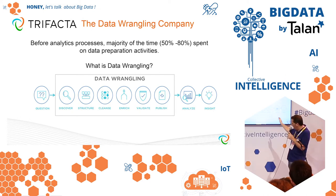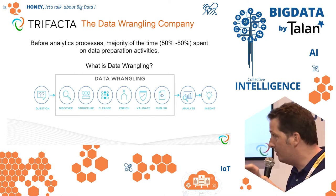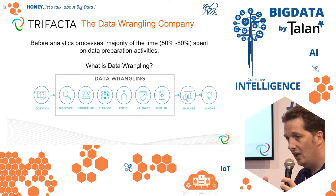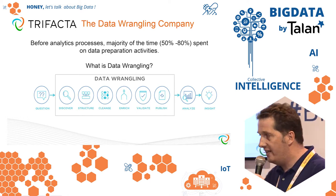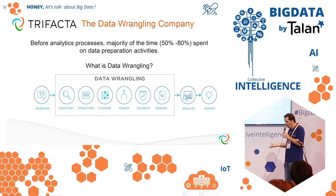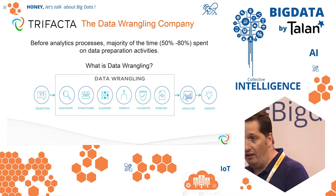Data wrangling is the activity from your raw data to the analytic — everybody does that. You need to discover structure, discover quality, get data from unstructured sources — logs, JSON, XML, etc. Clean the data, enrich, do lookups, joins, aggregates, pivots, etc. Then validate and publish the data, clean and ready for analytics — ready for PreVision, for example.